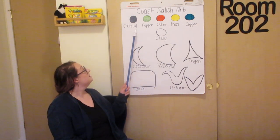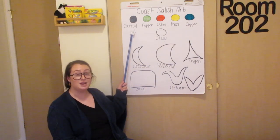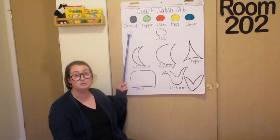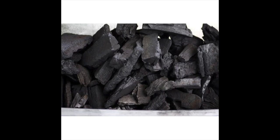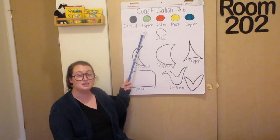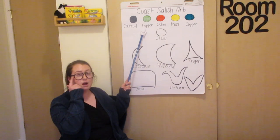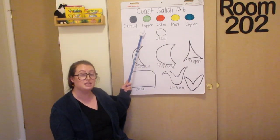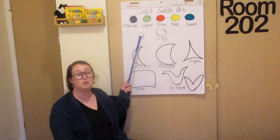Salish people made black paint using charcoal. They made green paint using copper, which is a metal. You might know what copper looks like from pennies. When copper gets old, it turns green or blue.